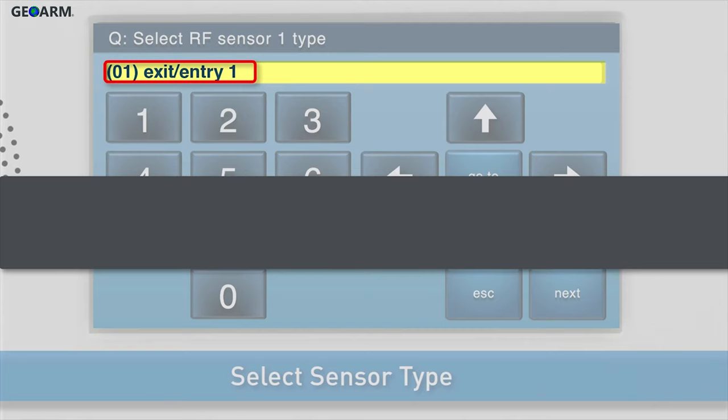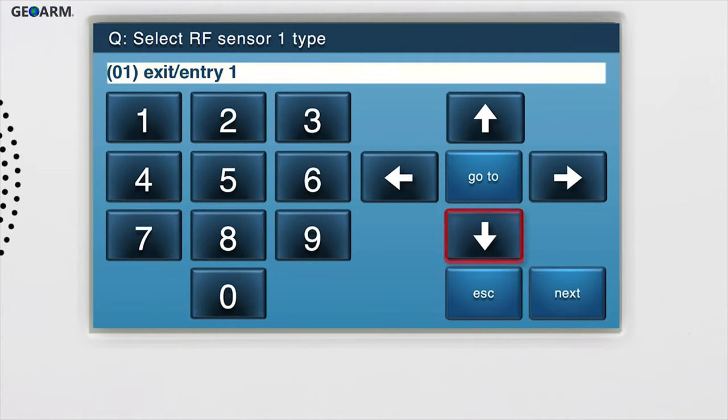For example, choose 01, exit entry 1, if you are converting a hard-wired door contact. Press the down arrow to go to the next sub-question.